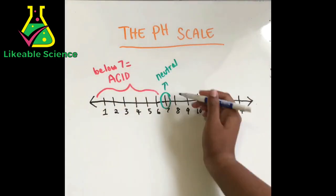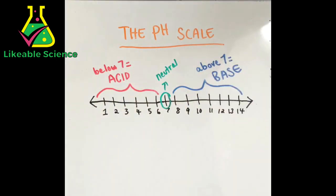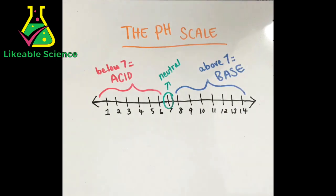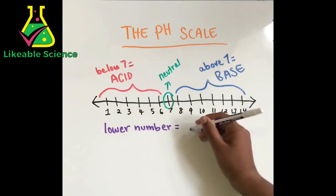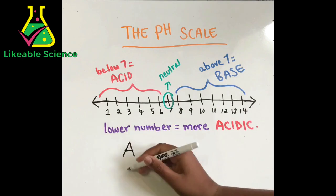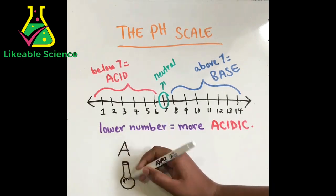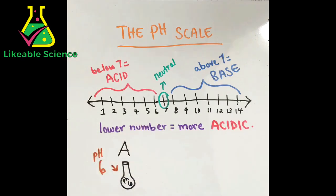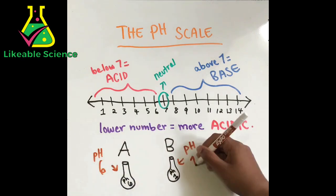How acidic a substance is increases as you go down the pH scale. The lower the number, the more acidic. For example, let's say there are two substances: substance A is pH 6 and substance B is pH 1. Which is more acidic? The lower number here is 1, so substance B is more acidic.